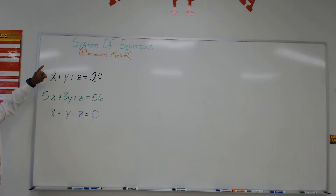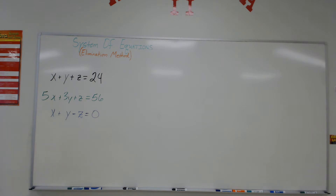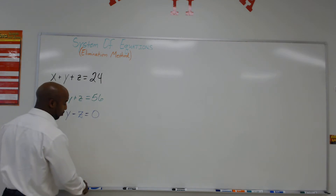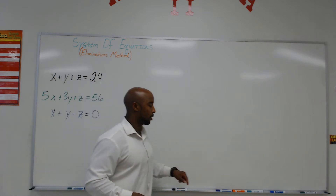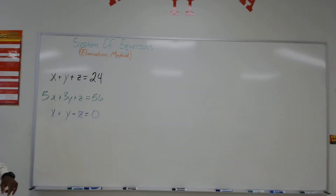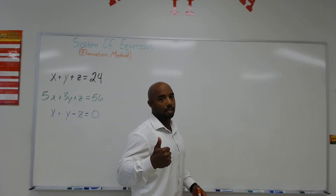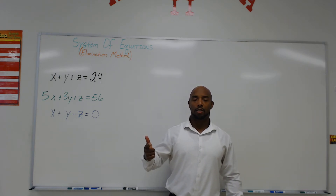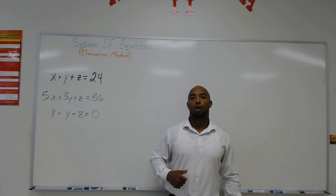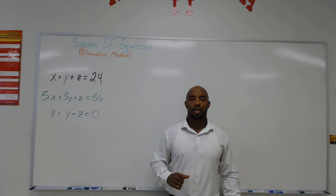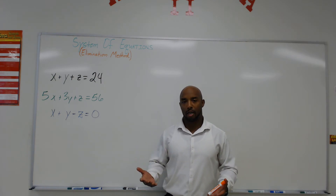Your job is to pick any two equations. First of all, target a variable — whether it be the x variable, the y variable, or the z variable — and we want to eliminate these as soon as possible using addition or subtraction of equations. So step one: pick a variable, any variable, and we're going to choose to target that variable. Step two: we're going to add or subtract equations from each other to eliminate that variable.